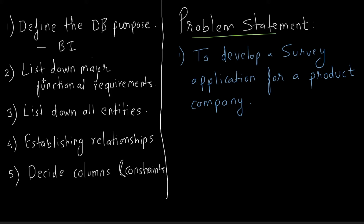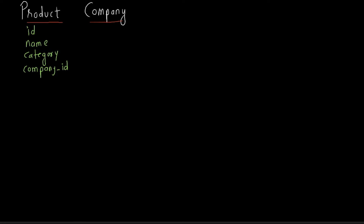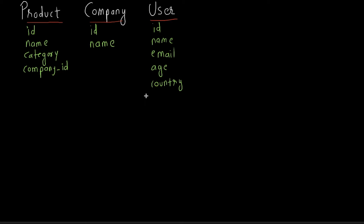Now that we know all the steps in the database design process, let's move on to the final schema. My first table will be 'product' with columns: id, product name, category, and company_id, because every product belongs to a company. We start with one company, but tomorrow we may extend to others. So we'll also have a 'company' table with columns id (primary key) and name. One company has many products, established via the company_id foreign key in the product table.